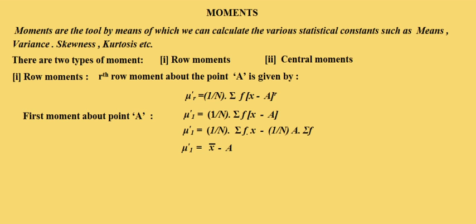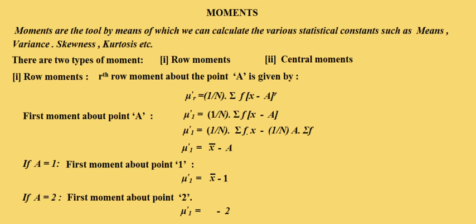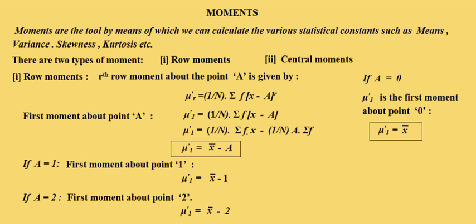Here A is any arbitrary point. If we take A equal to 1, we get the first raw moment about point 1: mu 1 dash equals x bar minus 1. If we take A equal to 2, the first moment about point 2 is mu 1 dash equals x bar minus 2. If we take A equal to 0, we get the first moment about point 0: mu 1 dash equals x bar. So the mean of the distribution is always equal to the first moment about point 0.